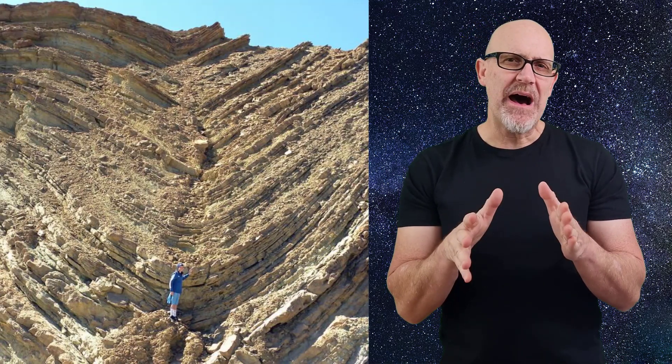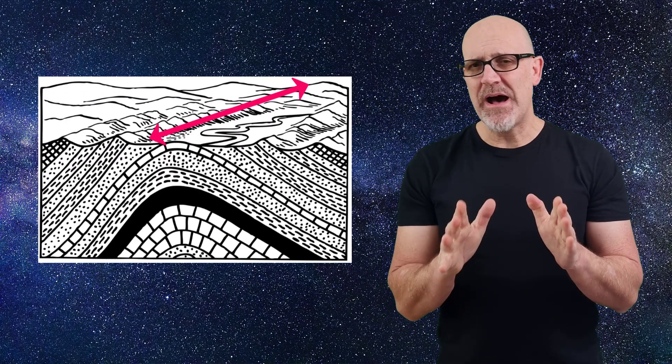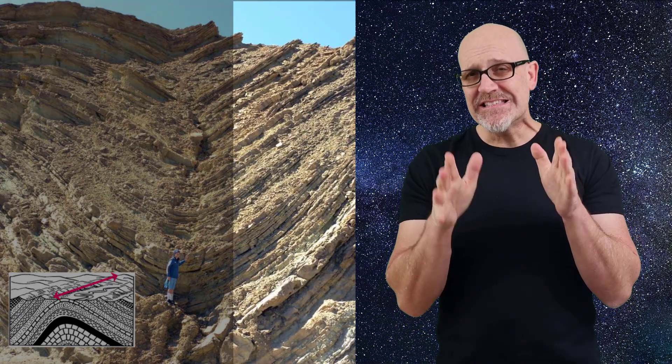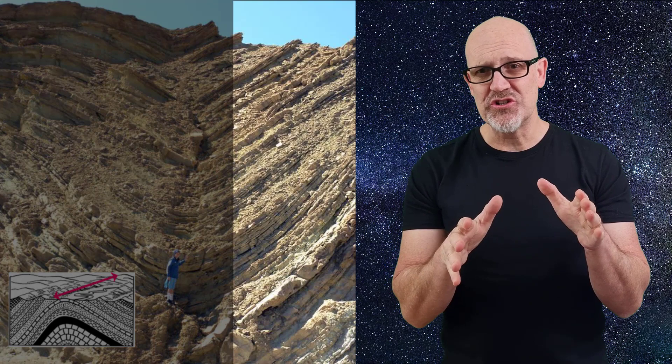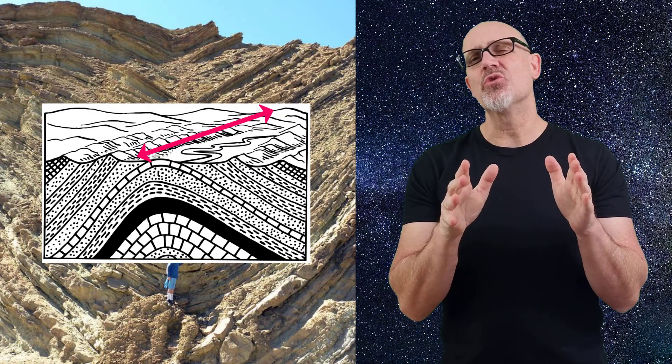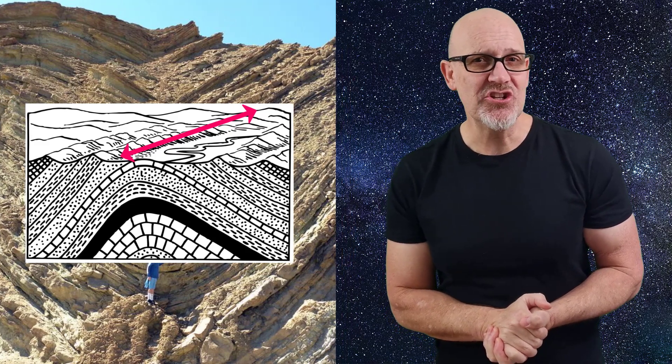Let's see how well you did. Pause the video if you need more time between each question. What is this part of this structure called? Make sure to tell me whether it belongs to an anticline or a syncline. What is this part called, and what structure does it belong to? If you said a syncline limb for the first question, you'd be correct. The correct answer for the second question is an anticlinal hinge line.